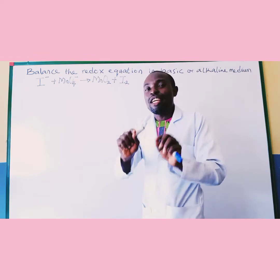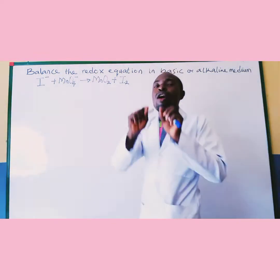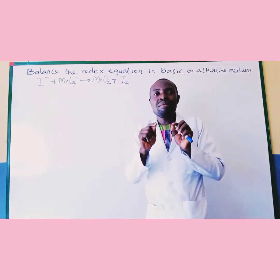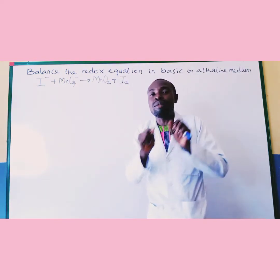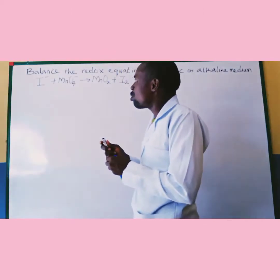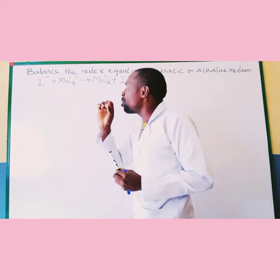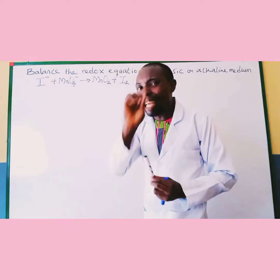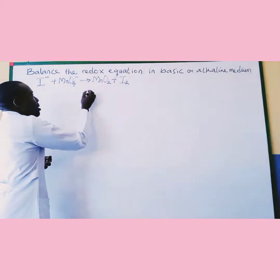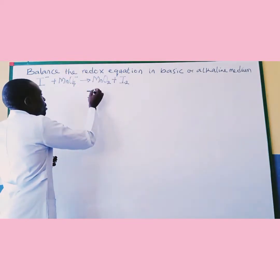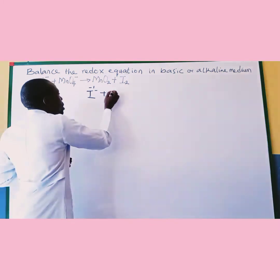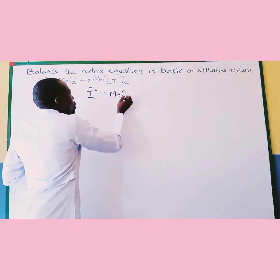Keep in mind that balancing redox equations in these kinds of medium is not difficult. So as we solve here, the first step is to assign oxidation states to them. By doing so, you rewrite them — the state here is minus 1 for MnO4⁻.